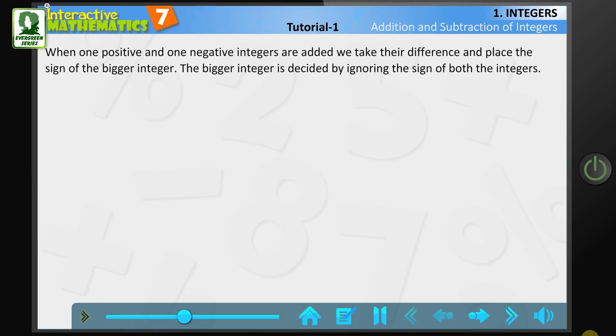When one positive and one negative integer are added, we take their difference and place the sign of the bigger integer. The bigger integer is decided by ignoring the sign of both integers.